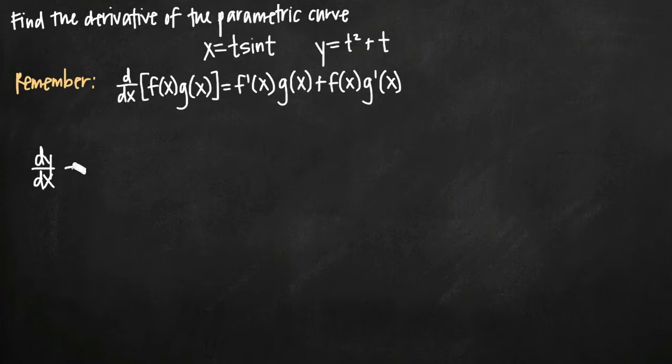So the way that we take the derivative is we actually take the derivative of y with respect to t, and we divide that by the derivative of x with respect to t.